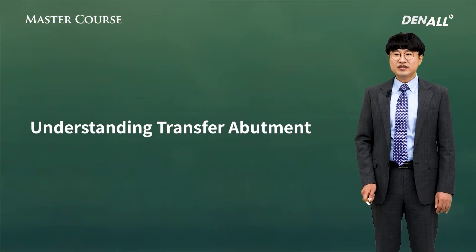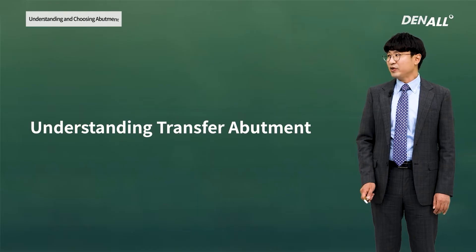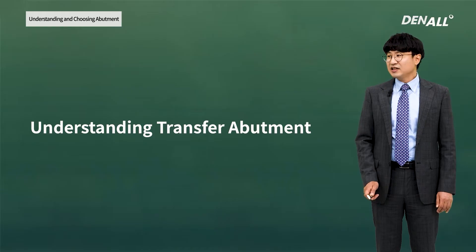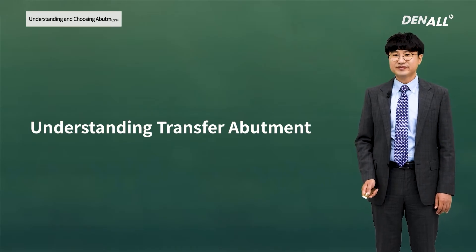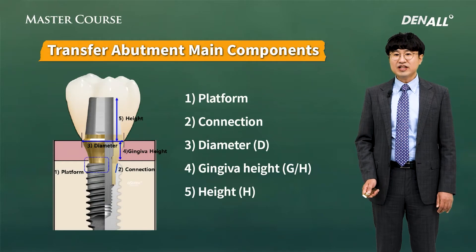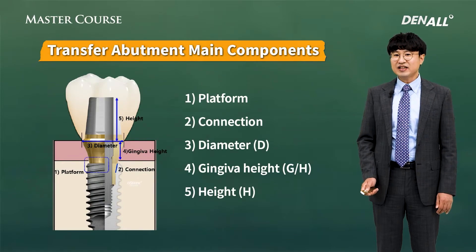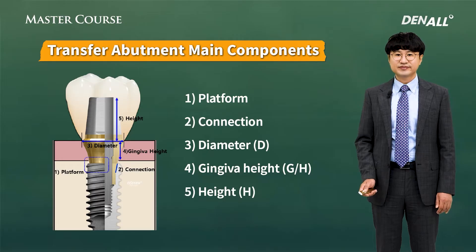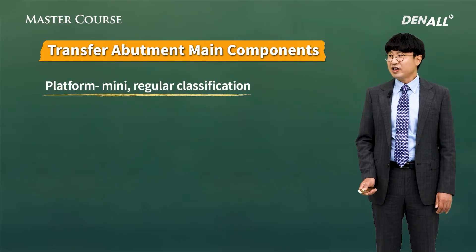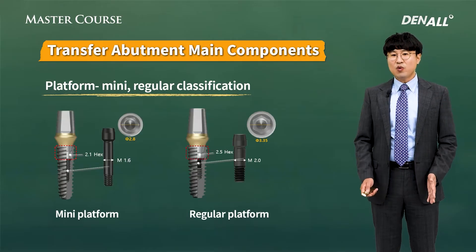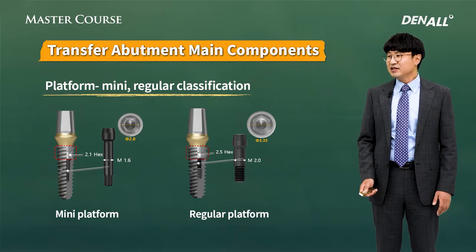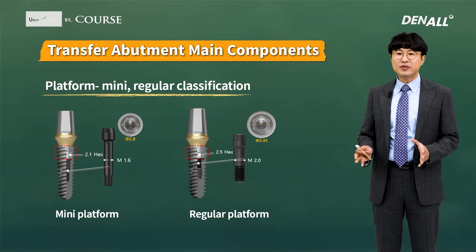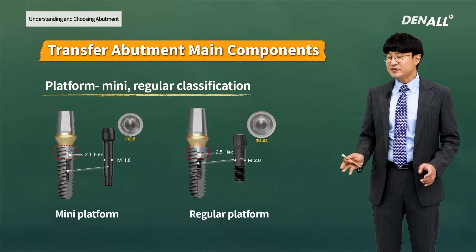Let's have a look at the stock abutment — the transfer abutment. The transfer abutment is the most widely used one among the stock abutments. There are five main components in the stock abutment. First, let's have a look at the platforms. For fixtures with a diameter of 3.5 or less, a mini-platform abutment can be used. Abutment platforms can be selected depending on the fixture diameter.